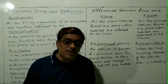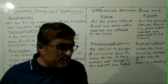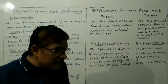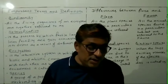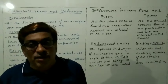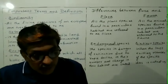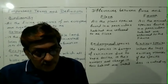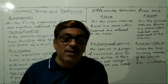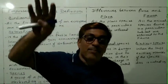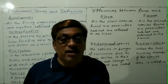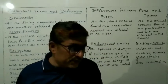What do you mean by extinct species? E-X-T-I-N-C-T. A species is called an extinct species when the last existing member of that species dies.